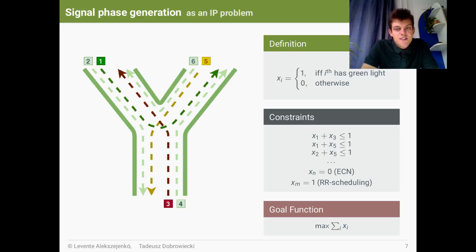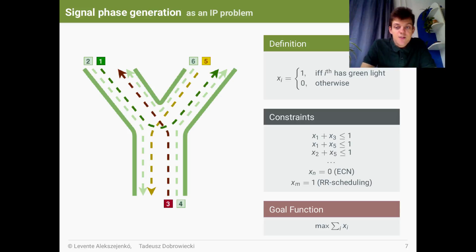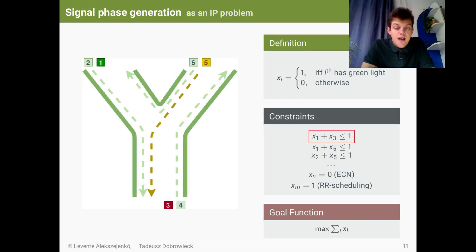For a simple three-legged intersection, it can be written as follows. Every x variable represents the state of a traffic light for a direction between two legs of the intersection. So x1 equals 1 if and only if there is a green light from the upper left to the upper right direction. x2 equals 1 if and only if there is a green light from upper left to the bottom direction. Every other x variable will be equal to 0. Then we have three types of constraints. The first type describes which directions cannot have green lights at the same time. For example, direction 1 and direction 3 cannot have green lights simultaneously.